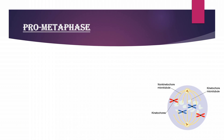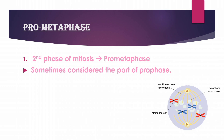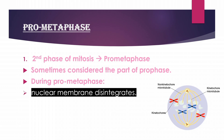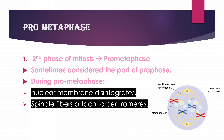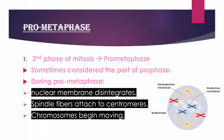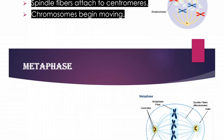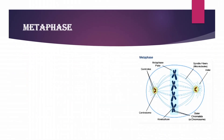Prometaphase is the second phase of mitosis, though it is sometimes considered part of prophase. In prometaphase, the nuclear membrane is disintegrated, spindle fibers attach to the centromeres of chromosomes, and chromosomes start moving.